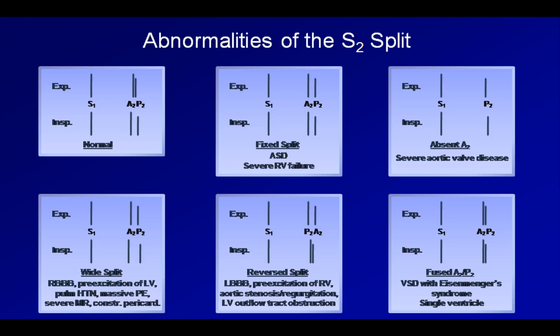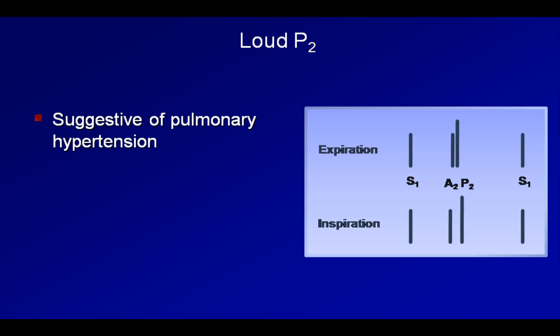The only other abnormality of S2 that I'll mention here is an unusually loud P2. P2 is usually softer than A2 and is usually absent entirely when one is auscultating at the apex. However, a P2 that is louder than A2, or one that is easily audible at the apex, is suggestive of pulmonary hypertension. Take a listen here.